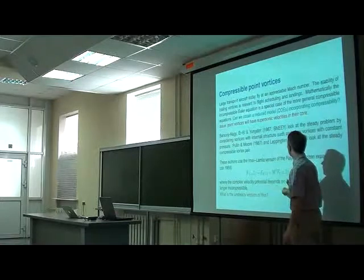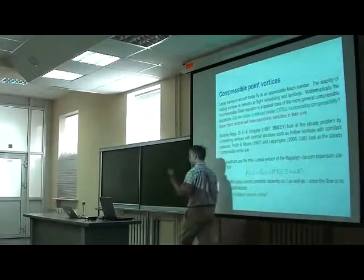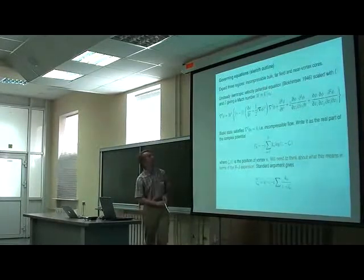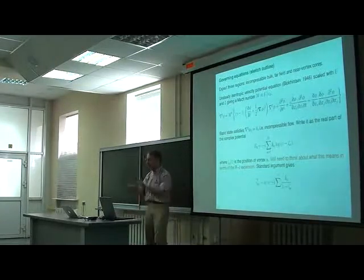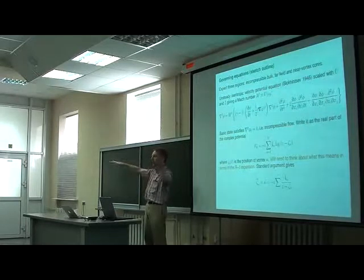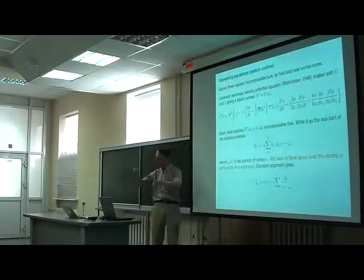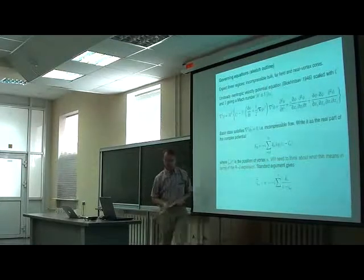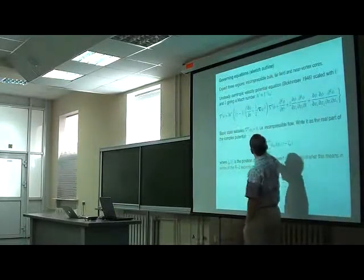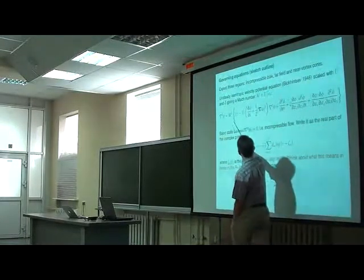So there has been work on this. There's a paper by Bartholomew, Nagy, et al. who look at a steady problem with vortices and they have to consider the internal structure of the vortices. And there are papers by Pullin and Moore and Leppington who look at a steadily propagating compressible vortex pair in constant velocity. In all these cases, one of the tools they use is what's called the Rayleigh-Janzen expansion where I have an expansion in Mach number of essentially my fluid properties, velocity and potential. So the question I have is what is the unsteady version of this? Can I get unsteady compressible point vortices? What do they look like? So I'm going to give you a sketch of how you do this, not all the details because it's messy. We have in fact three regions.